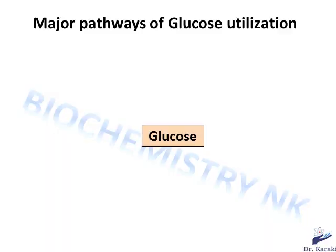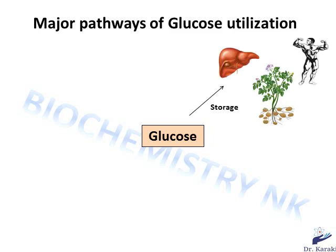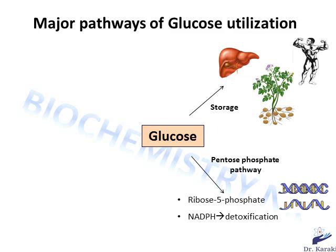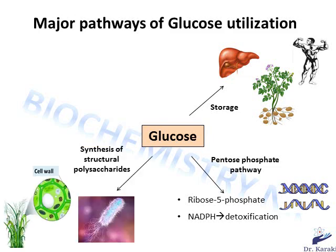First let's talk about the four major pathways of glucose utilization. Glucose can be stored in polymeric forms such as starch in plants and glycogen in human muscles and liver when there is excess energy. It can be used in the pentose phosphate pathway for the synthesis of ribose phosphate and NADPH. The ribose 5-phosphate is used for the synthesis of nucleotides and nucleic acids like DNA and RNA, and NADPH is used for the synthesis of cholesterol and for the elongation of fatty acids. It is also involved in the cell's detoxification. Glucose can also be used for the synthesis of structural polysaccharides, for example in cell walls of bacteria, fungi and plants. It can also be broken down into pyruvate in a process called glycolysis to generate energy.